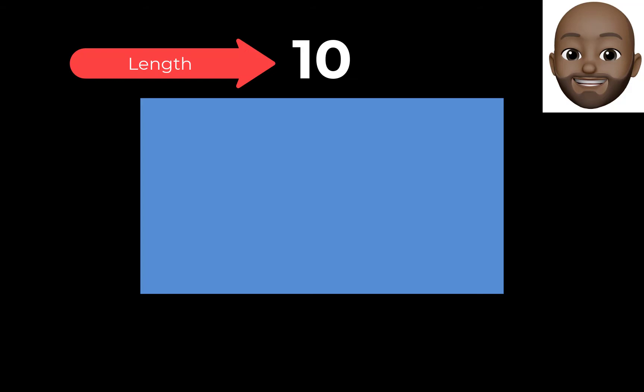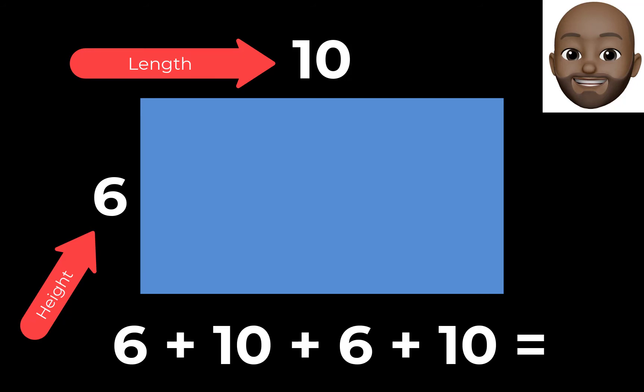Next example, this rectangle has a length of 10 and a height of 6. To find the perimeter, simply add all the sides and the answer will be 32.